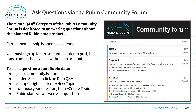As a final note, the Data Q&A category of the Rubin Community Forum is dedicated to answering questions about the planned Rubin data products. Forum membership is open to everyone — you must sign up for an account in order to post, but most content is viewable without an account. To ask a question about the Rubin data products, go to community.lsst.org, click on Data Q&A under Science, and you will be taken to the category where you can see other posted questions. Click "New Topic" at upper right and a pop-up form will appear; compose your question and click "Create Topic" to post it. Rubin staff will answer your question as soon as possible.